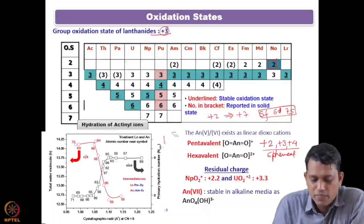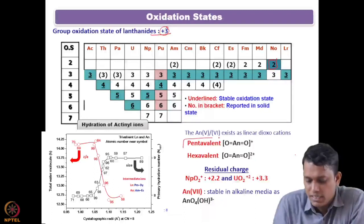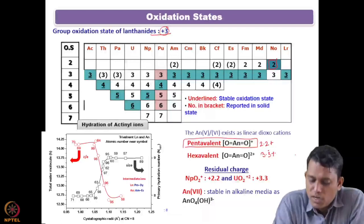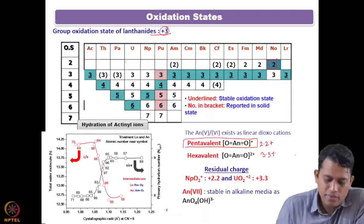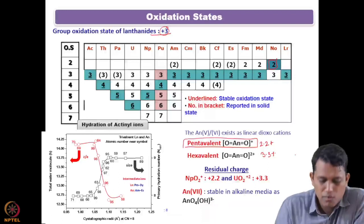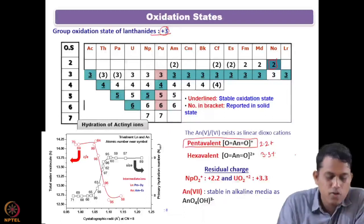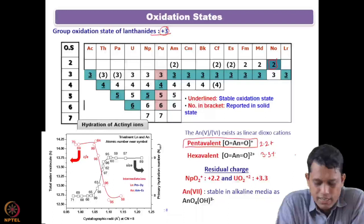Lots of research groups have worked on this, and finally they concluded that the bonding or chemical properties of these actinyl oxygen states are dependent on an effective charge of 2.2 units in the case of pentavalent and 3.3 units in the case of hexavalent. We also discussed the hydration structure of different actinides in water, where for the trivalent they start with around nine water molecules and reach up to eight, with a transition region.